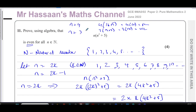You have to have an algebraic proof which takes into account every single possibility. That's what this does. When I say n equals 2k with k a natural number, I've included every even number from 2 to infinity. And when I say n equals 2k minus 1, I've included every odd number from 1 to infinity.